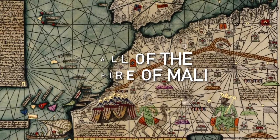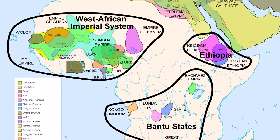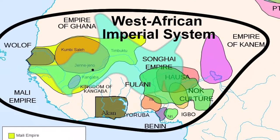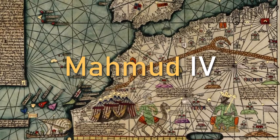Not long after the rule of Mansa Musa ended, the Mali Empire began to grow weak. In the 1400s, the empire began to lose control along the edges of its borders. Then, in the 1500s, the Songhai Empire rose to power. The Mali Empire came to an end in 1610 with the death of the last Mansa, Mahmud IV.